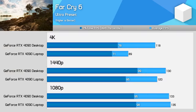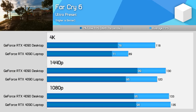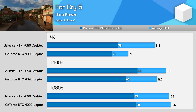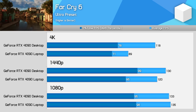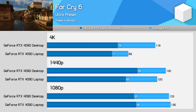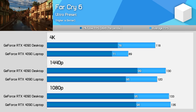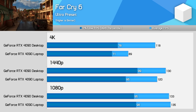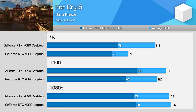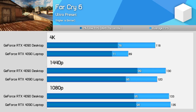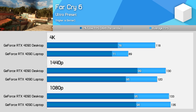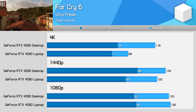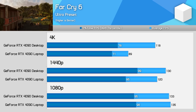Far Cry 6 is one of the more unusual cases here. At 1080p, we see virtually identical performance between the desktop and laptop models, as we're fully CPU limited here, and the Core i9-13950HX is able to play to its strengths. This isn't a particularly strong title for Ryzen. At 1440p, we also don't see much of an advantage for the desktop card, coming in just 8% faster on average, with 15% higher 1% lows. But then at 4K, the margin increases to 33% overall — not the biggest margin, but certainly a favourable result for the desktop card.